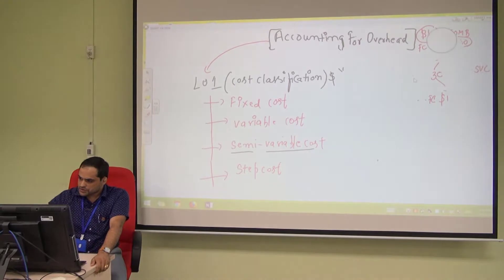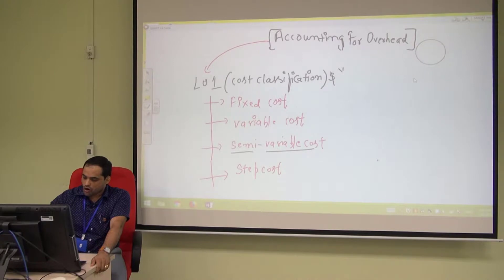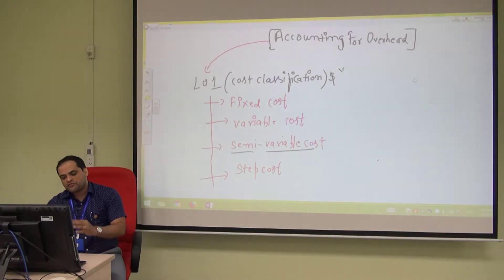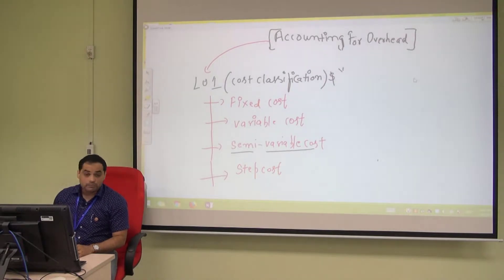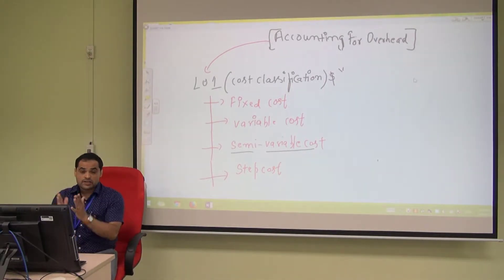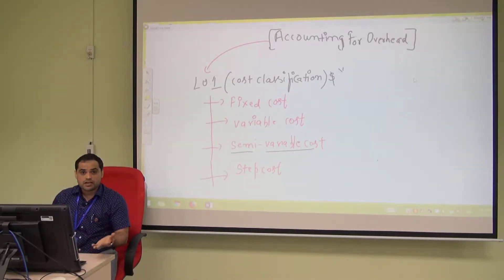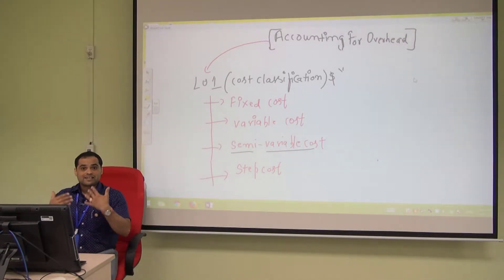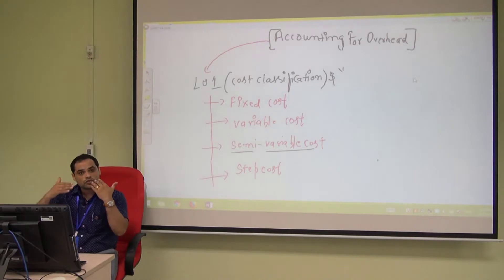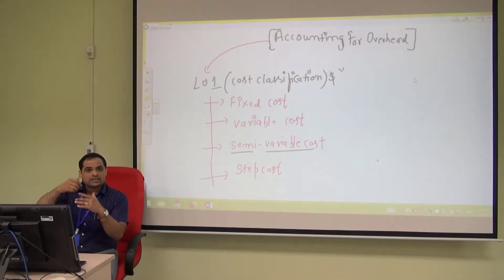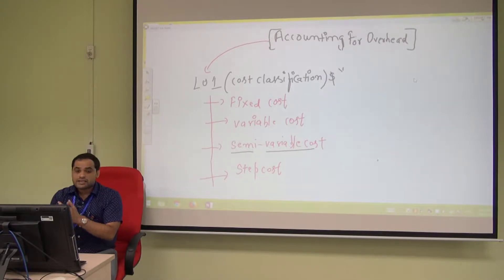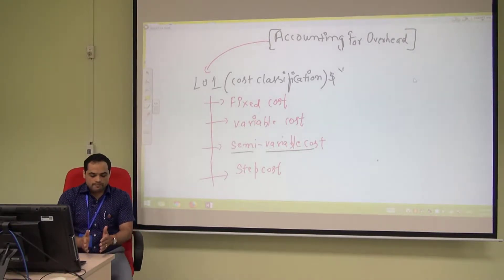Step cost is similar to semi-variable cost — it is also a combination of fixed and variable. But the difference is that in semi-variable cost, once you use up the fixed cost portion, your variable cost starts and the fixed cost does not come back. As you keep using it, the cost increases and turns into a variable cost.